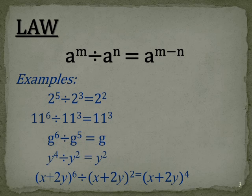Here we have some examples. 2 to the power of 5 divided by 2 to the power of 3 is 2 to the power of 2. 5 take 3 is 2. 11 to the 6 divided by 11 cubed is 11 cubed, because 6 take 3 is 3.